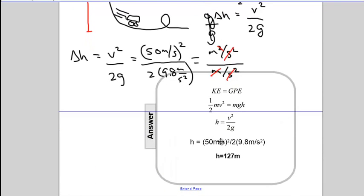And if your velocity was 50 meters per second at the bottom of that hill, that means you fell 127 meters. That'd be one heck of a hill.